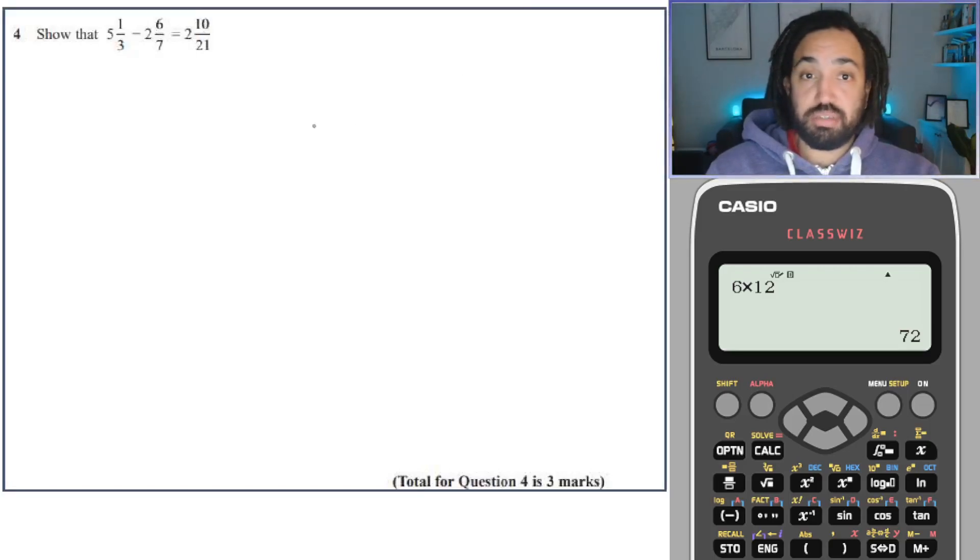Okay, next question. Similar deal. Because we're subtracting, it's exactly the same as addition. You need to, first off, do 5 times 3 is 15 plus 1 is 16. So there are 16 thirds there. 7 times 2 is 14 plus 6 is 20. So there are 20 sevenths there. And there's a subtraction sign in between.